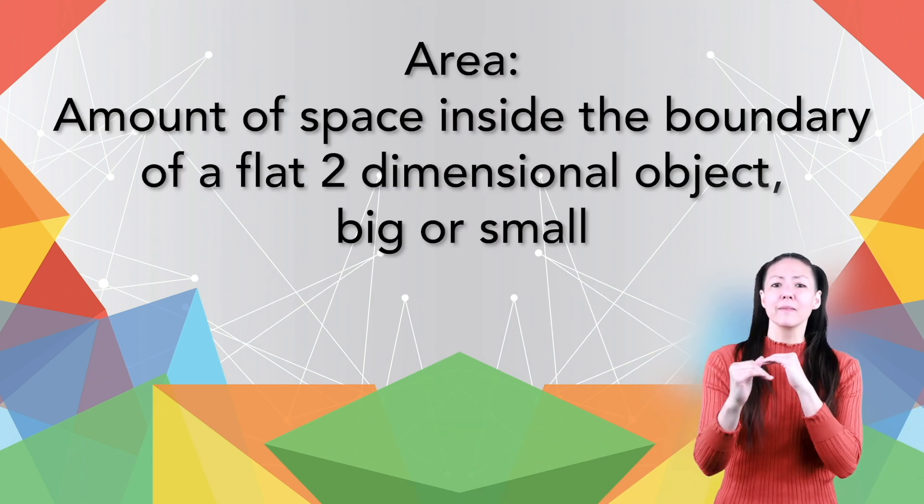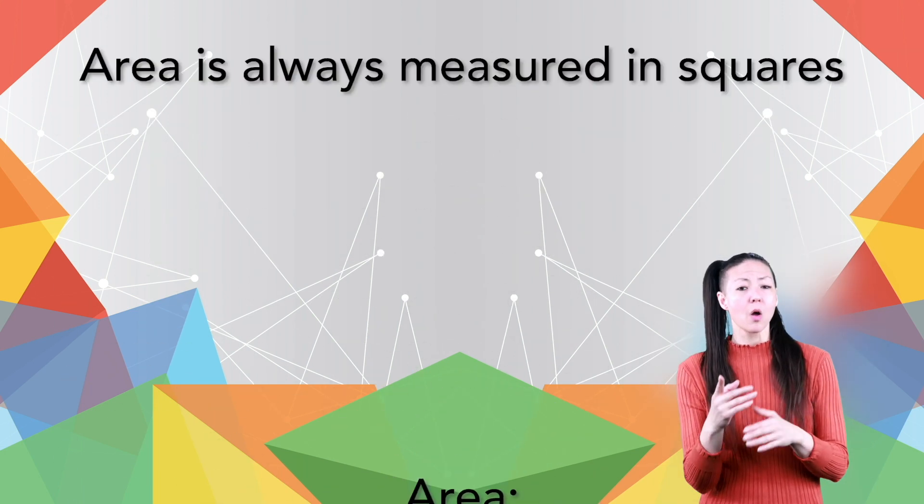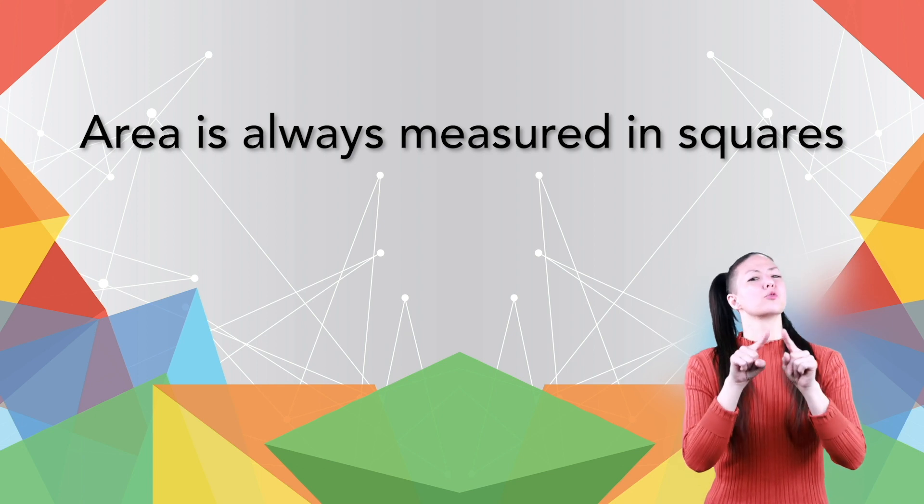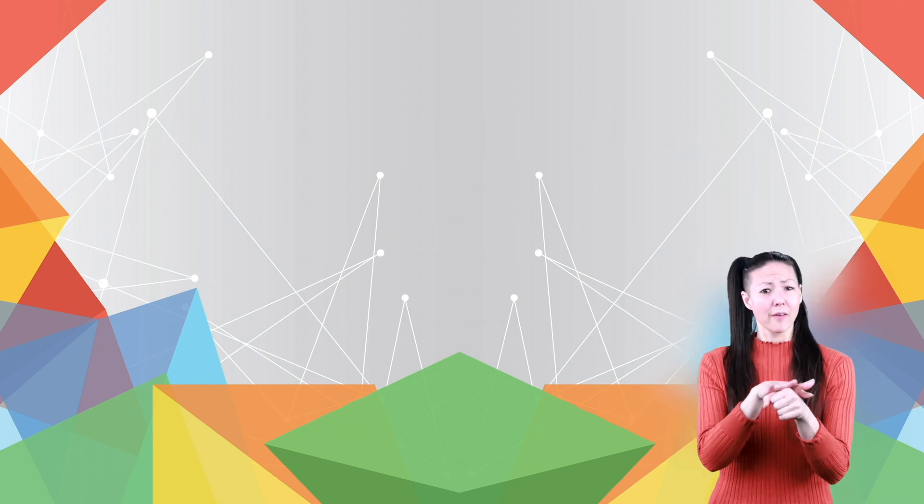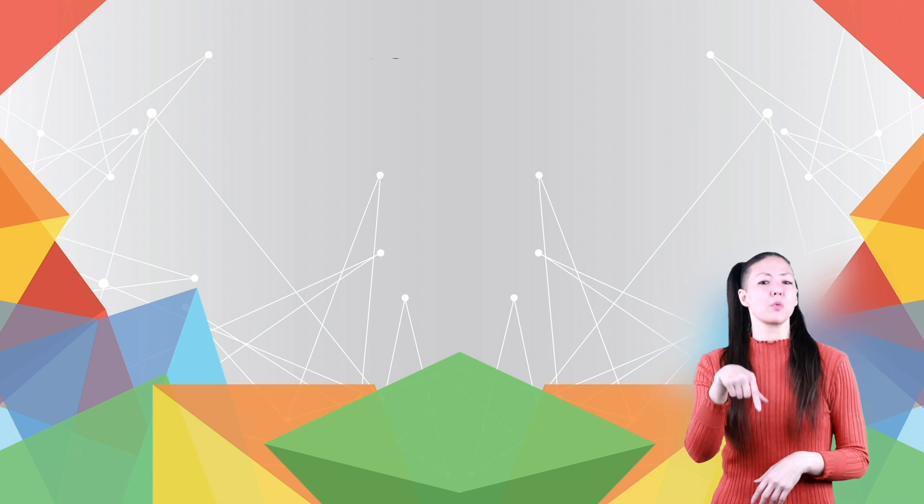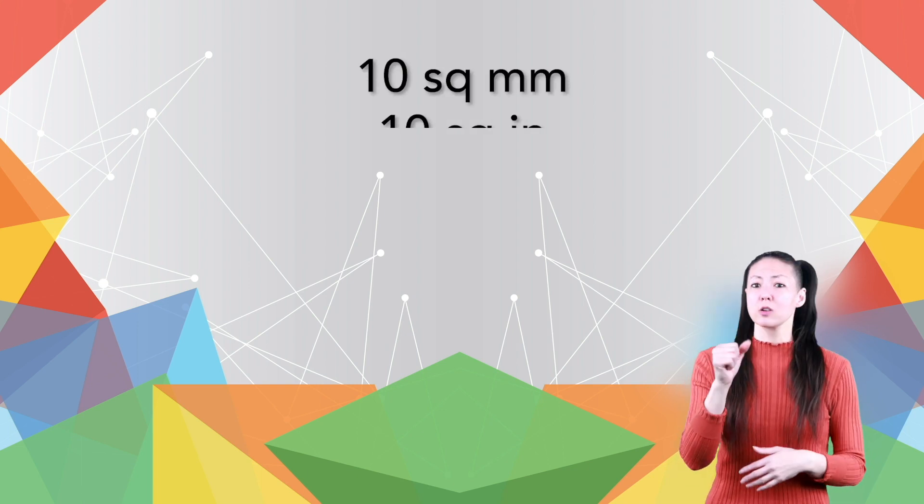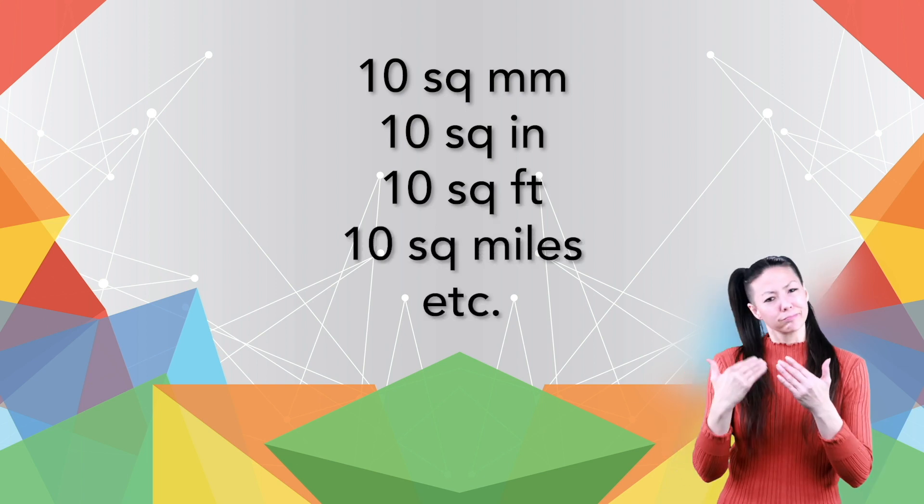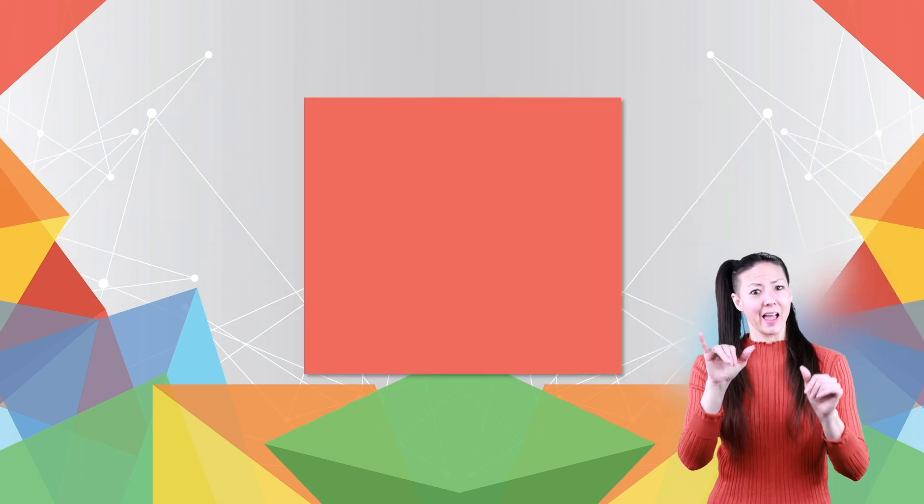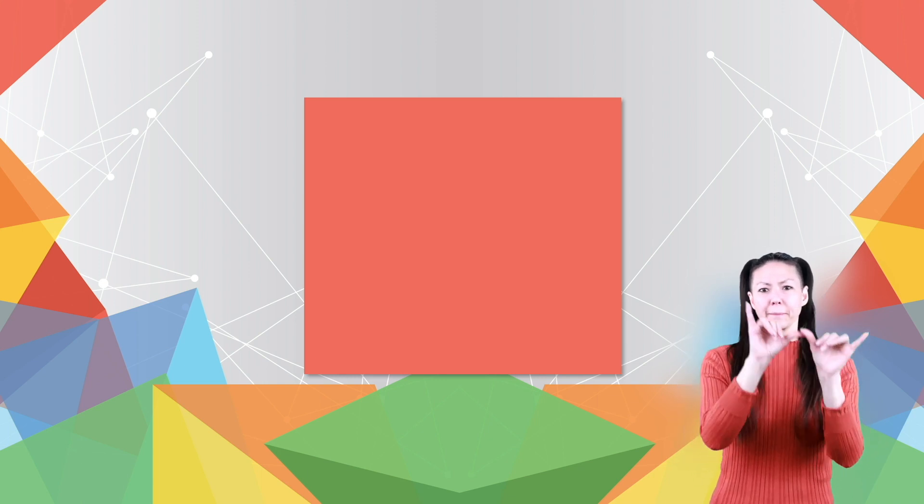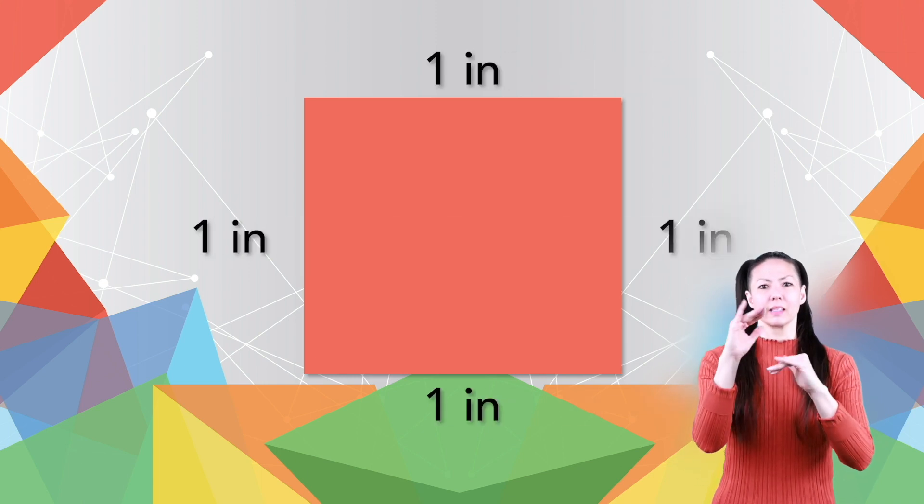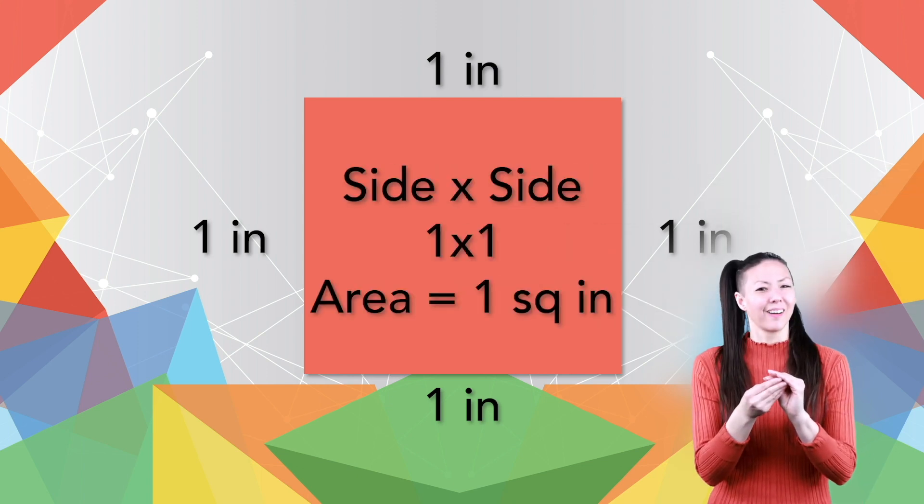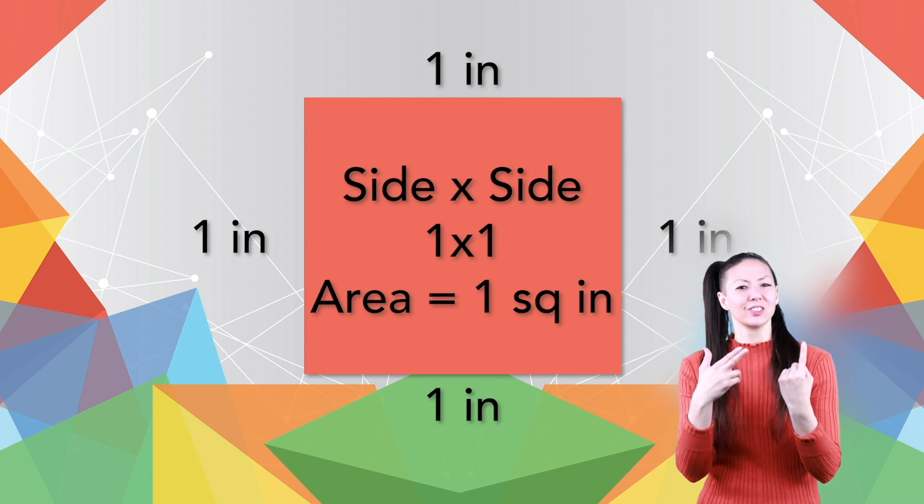Simply put, the area is the amount of space inside the boundary of a flat two-dimensional object, big or small. One thing to remember is that area is always measured in squares. So for example, the area of a space can be ten square millimeters, ten square inches, ten square feet, ten square miles, and so on. See this figure? It is a square, meaning all the sides are the same length. The length of each side is one inch, meaning that its total area measures one square inch, side times side, or one times one.